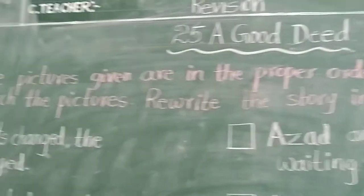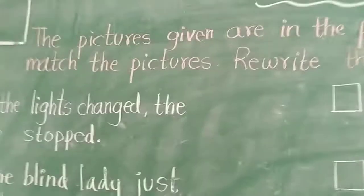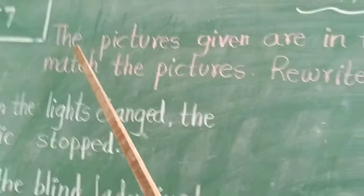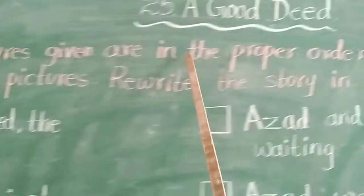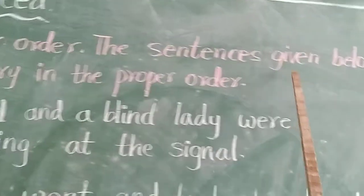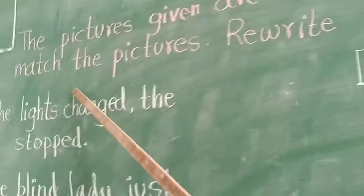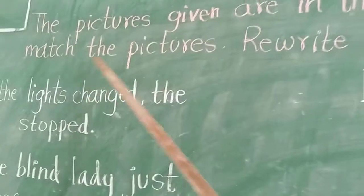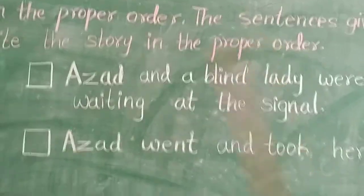Okay children, page number 57, let us revise this today. The pictures given are in the proper order. The sentences given below do not match the pictures. Rewrite this story in the proper order.